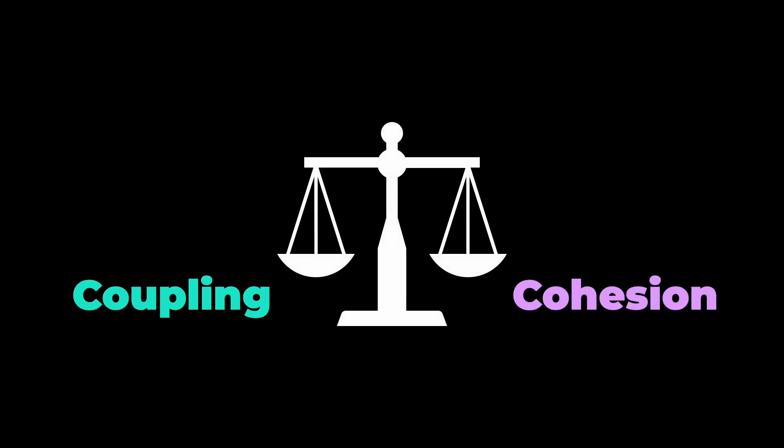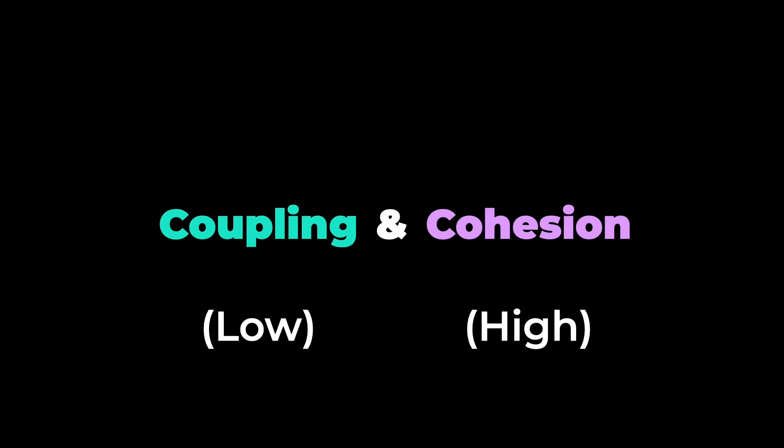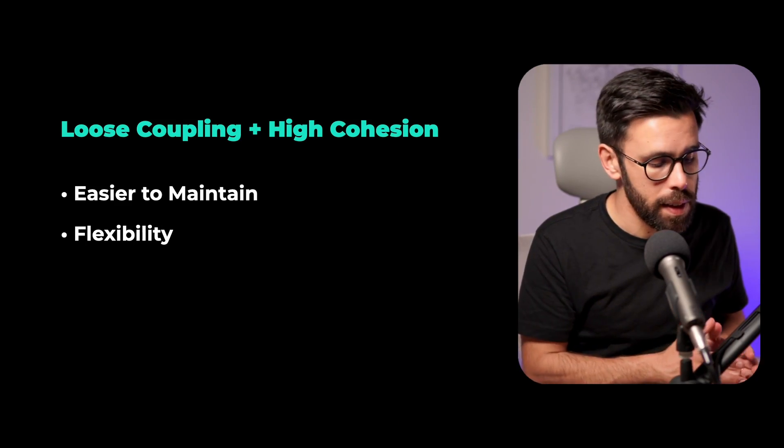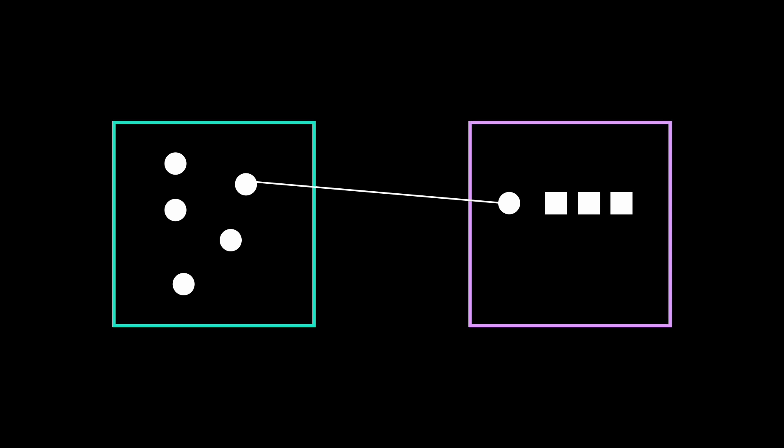Coupling and cohesion are two extremely important metrics, and they have a relationship with each other. You need to achieve a balance between them to have your system in harmony. You might have heard that we need a system that is loosely coupled and highly cohesive. What do we gain from that? The code will be easier to maintain because related concepts stay together and can change together. And importantly, you get flexibility — you can refactor internals without affecting the rest of the system, and swap a complete module without impacting the whole system.